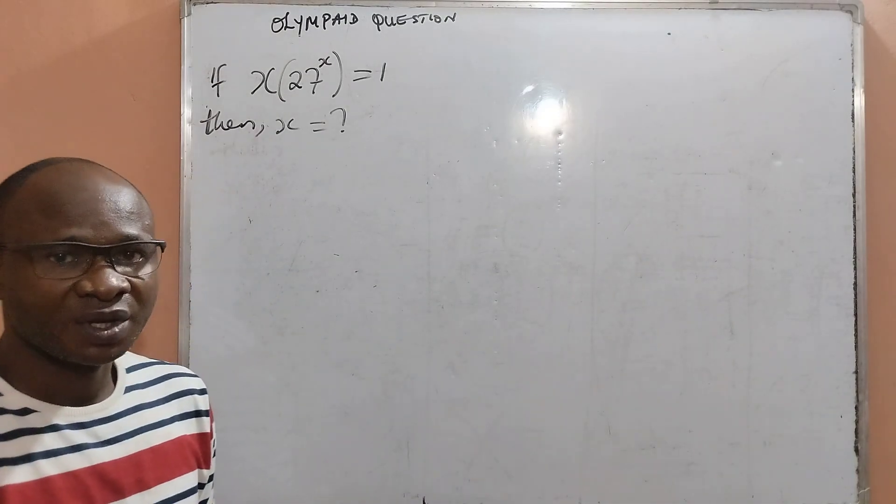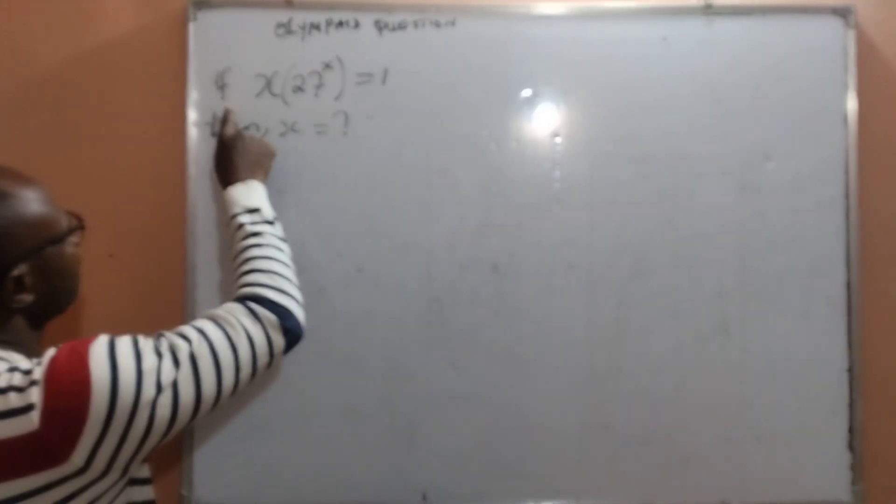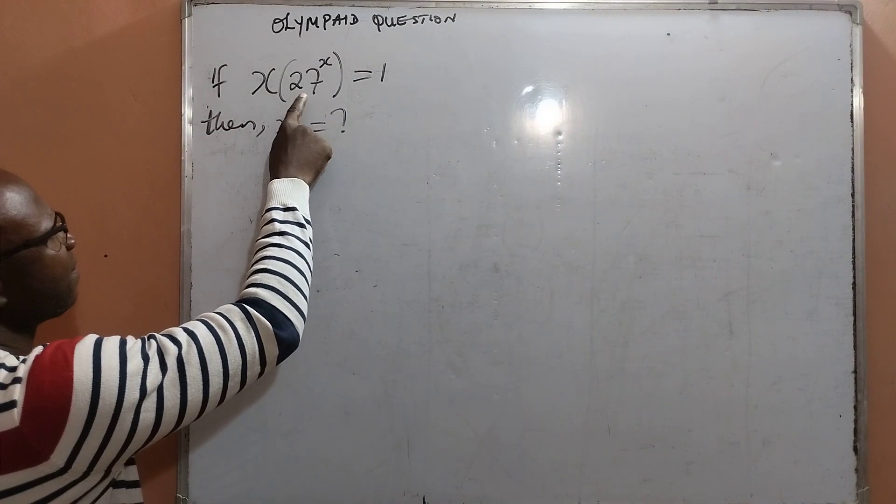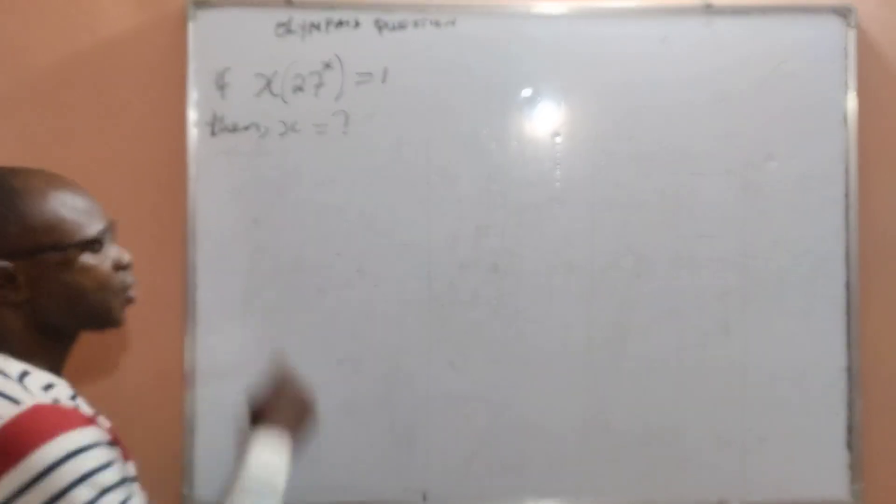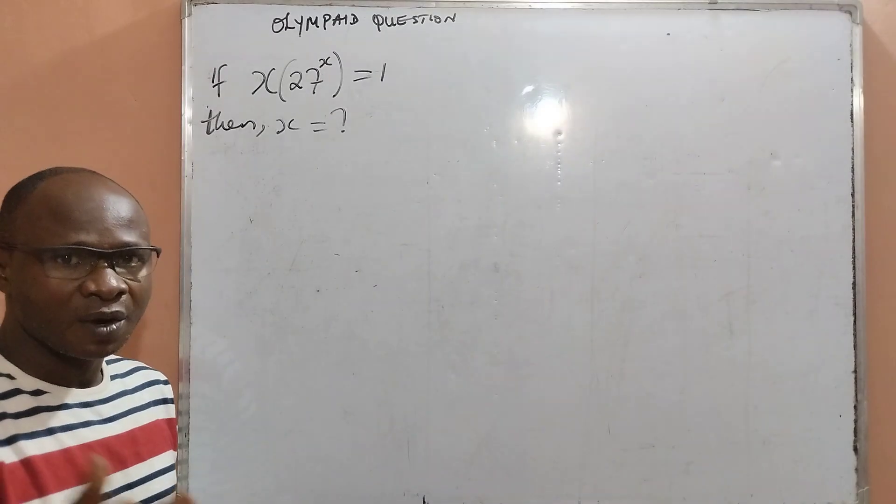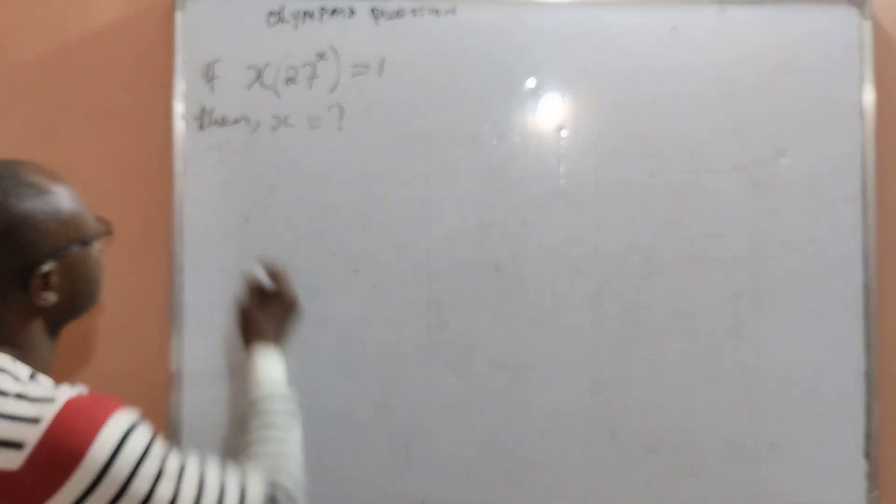Welcome viewers! Today I want to solve: if x multiplied by 27 raised to the power x is equal to 1, then what will be the value of x? Watch to the end. Solution.